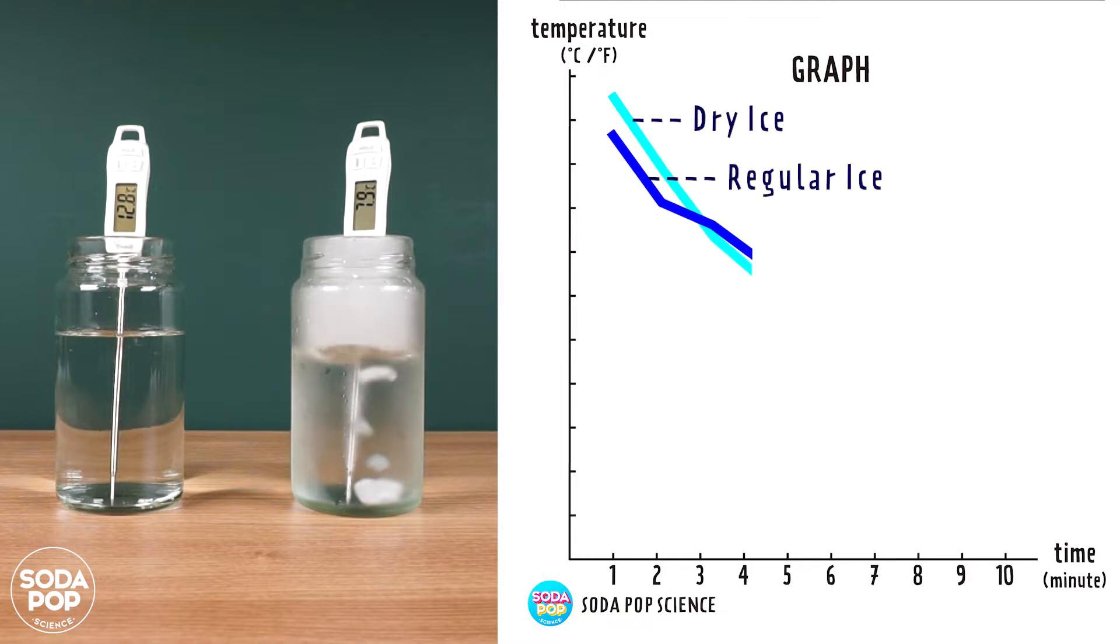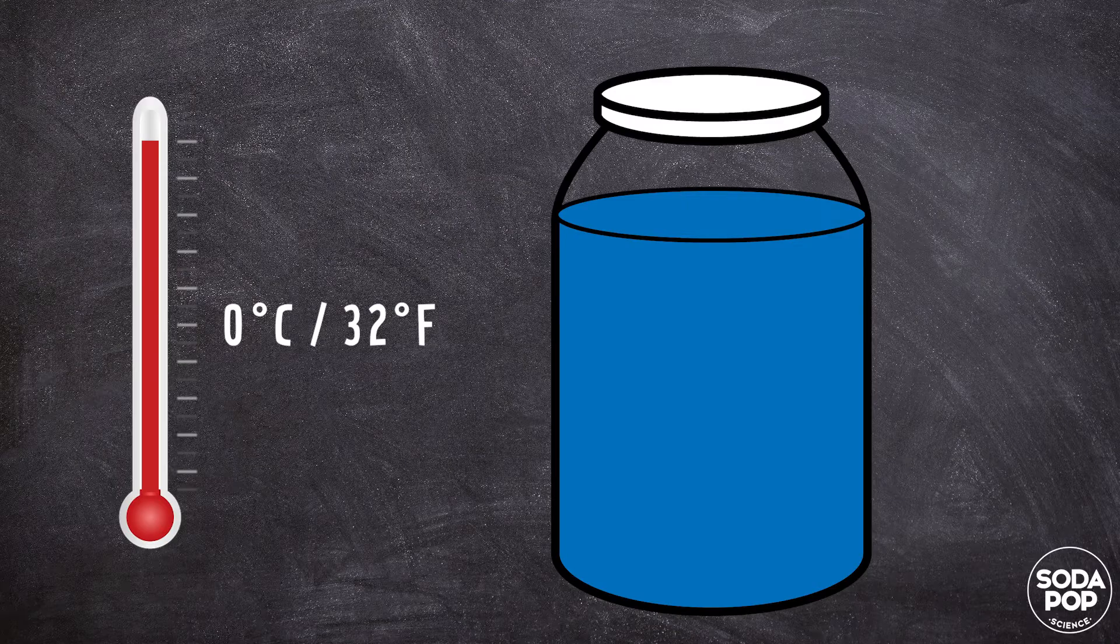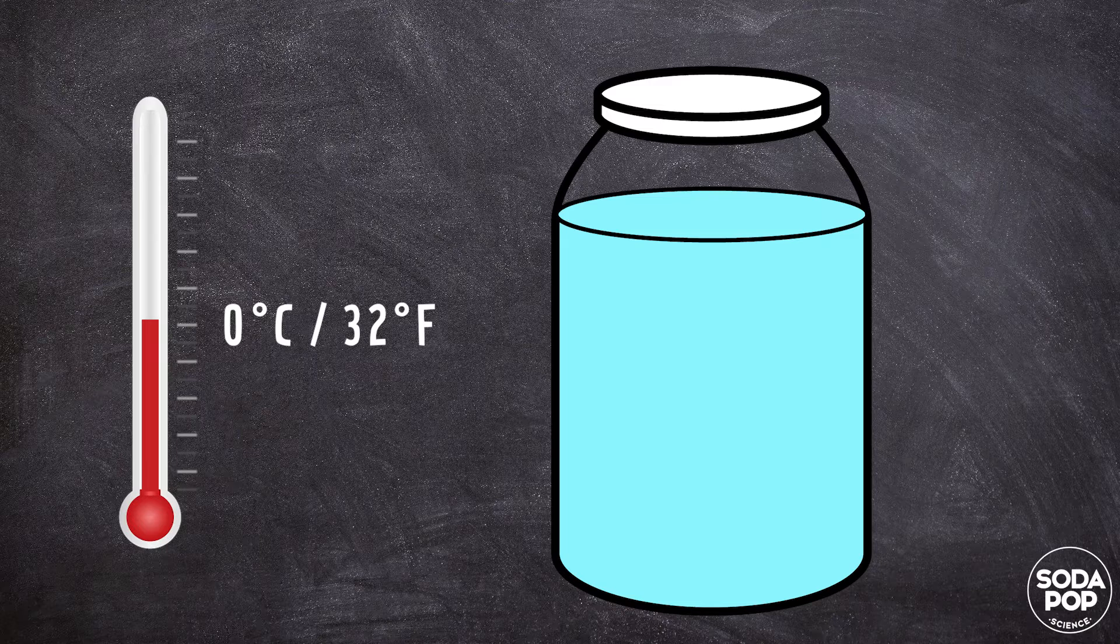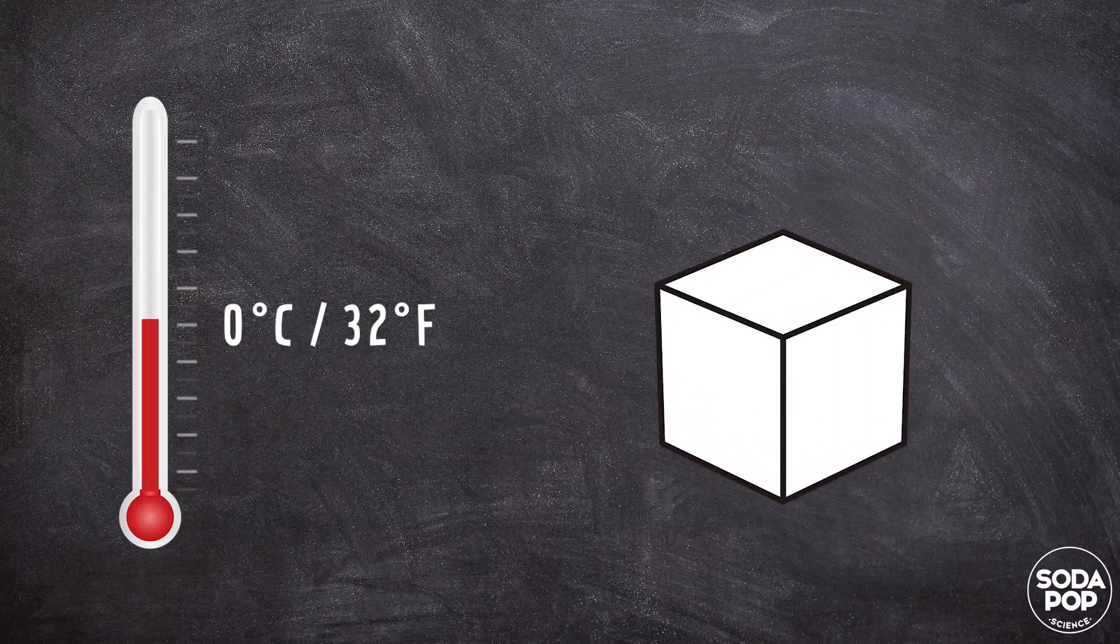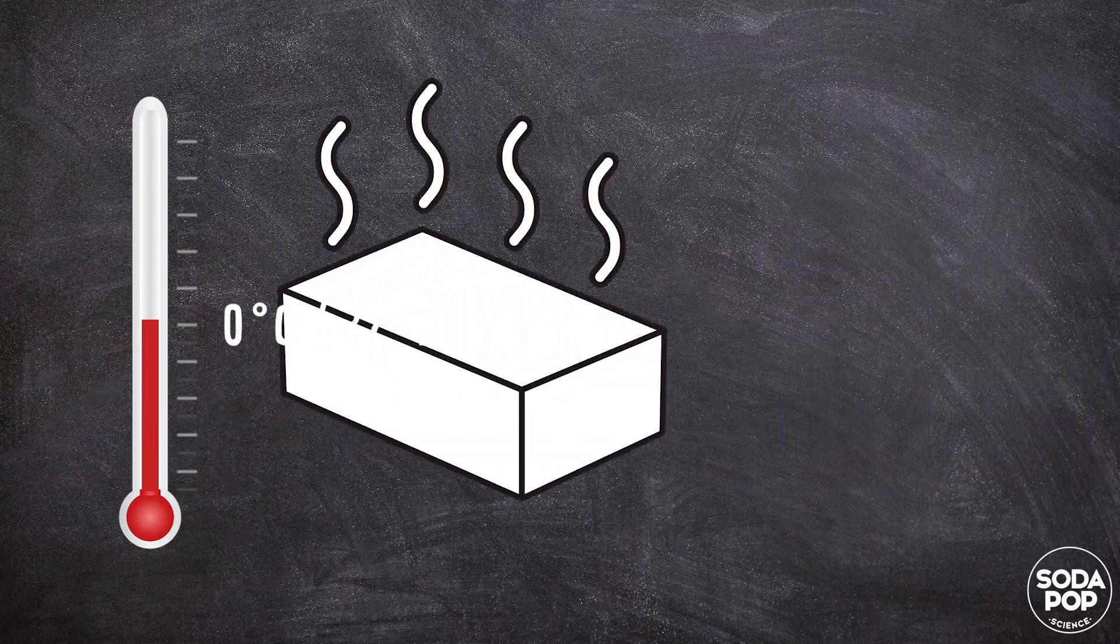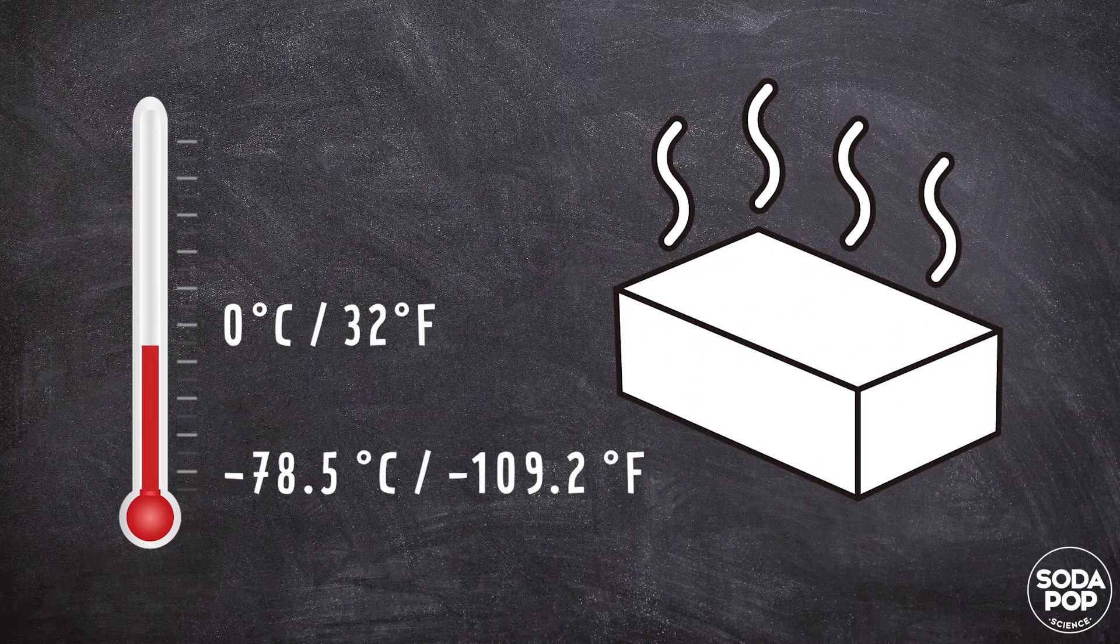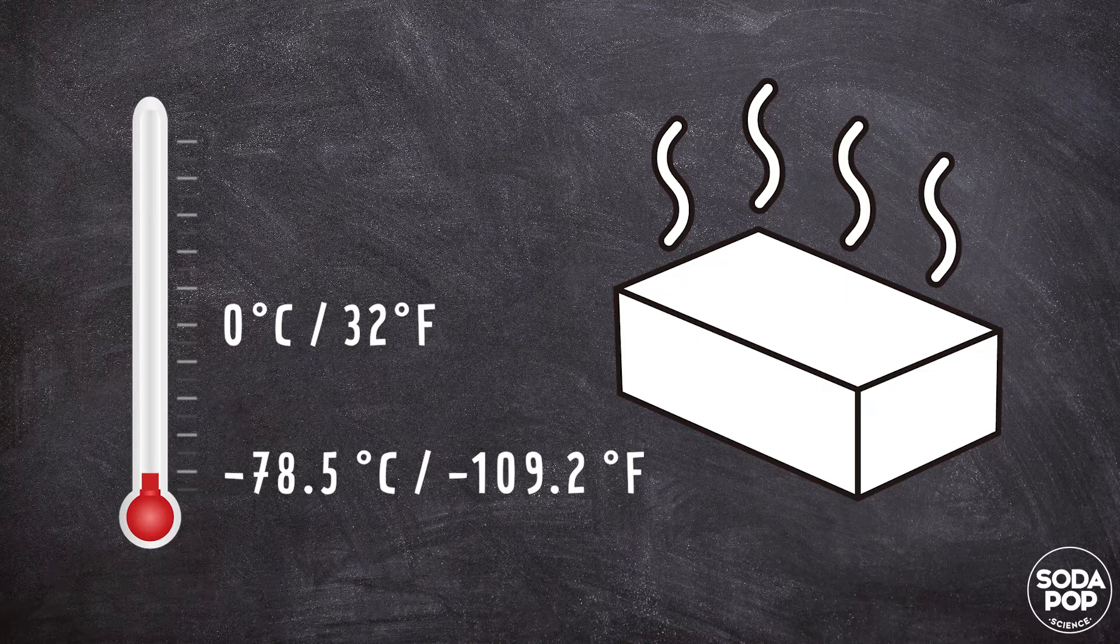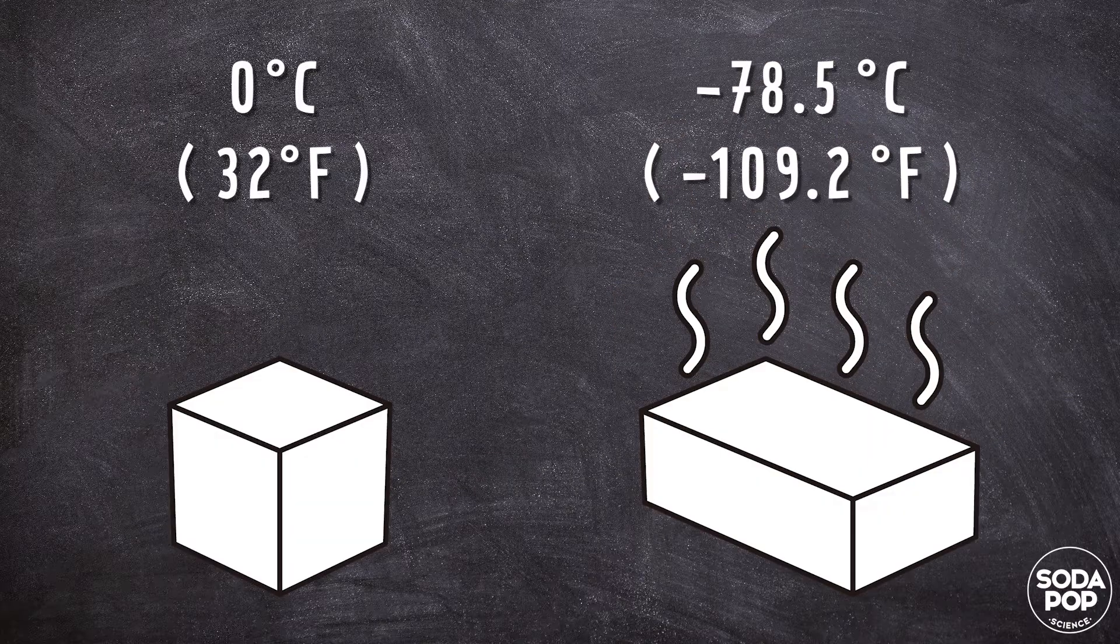In this video, let's talk about the science behind it. As you know, water freezes at 0 degrees Celsius or 32 degrees Fahrenheit, so the temperature of an ice cube is 0 degrees Celsius. The temperature of dry ice is minus 78.5 degrees Celsius or minus 109.2 degrees Fahrenheit. Dry ice is much colder than regular ice, so it can cool water down a lot faster.